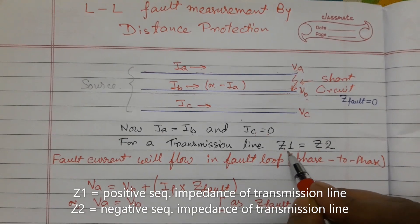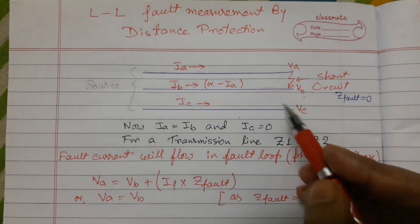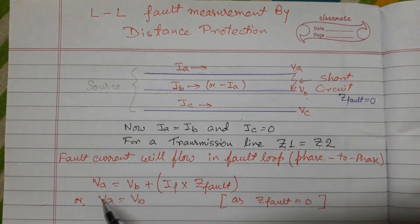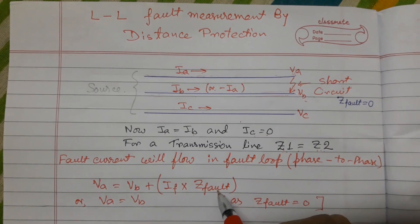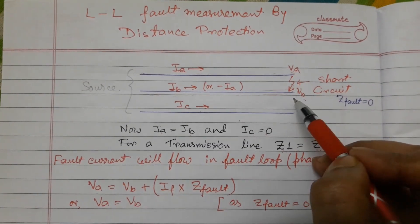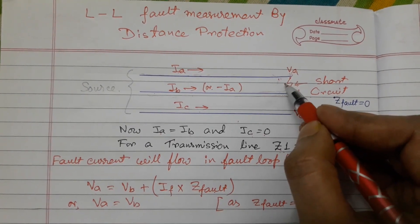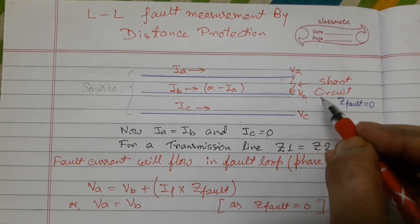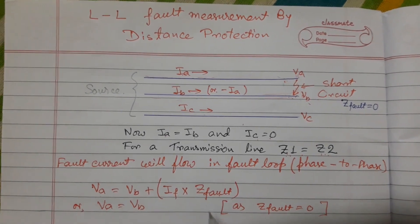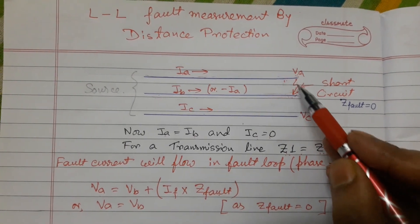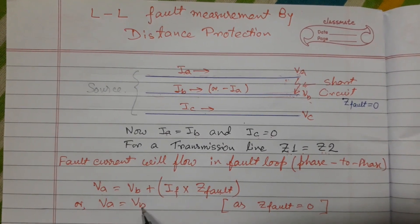During the fault, Va equals Vb plus If times Z_fault, because the voltage at this point equals the voltage at this point plus the voltage across the fault, which is fault current times fault impedance. But as this is a dead short circuit, Z_fault equals zero. So we can write Va equals Vb.